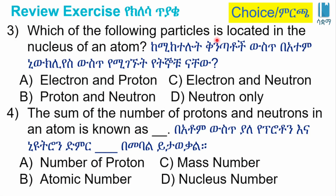Which one of the following particles is located in the nucleus of an atom? A: electron and proton. B: proton and neutron. C: electron and neutron. D: neutron. The answer is B, proton and neutron, which are found in the nucleus.